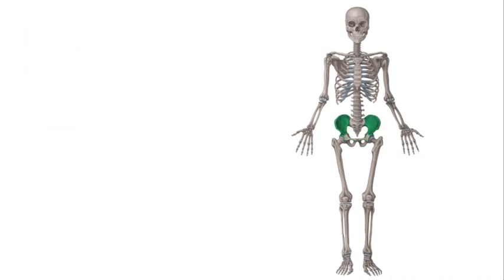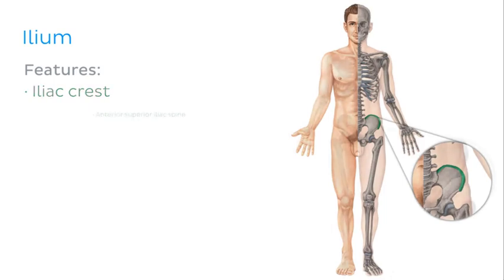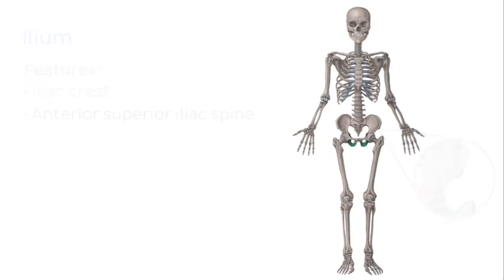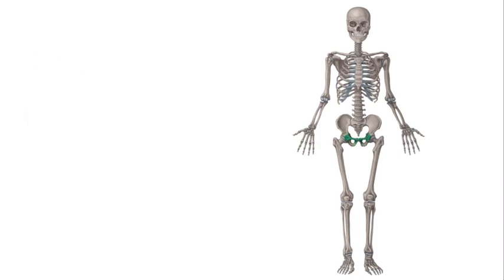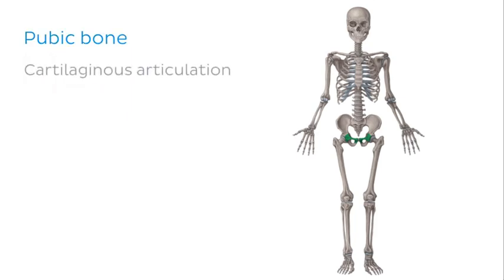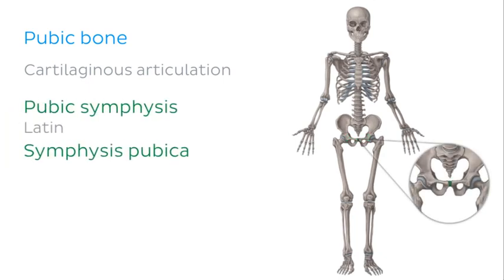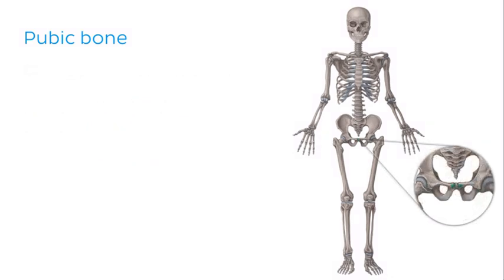The ilium has several notable features including the iliac crest and the anterior superior iliac spine. The ischium has a bony tuberosity on its inferior surface known as the tuberosity of ischium. The final bone that makes up the hip bone is the pubis or pubic bone. The two pubic bones are united via a cartilaginous articulation called the pubic symphysis, and on either side of the pubic symphysis is a tubercle known as the pubic tubercle.